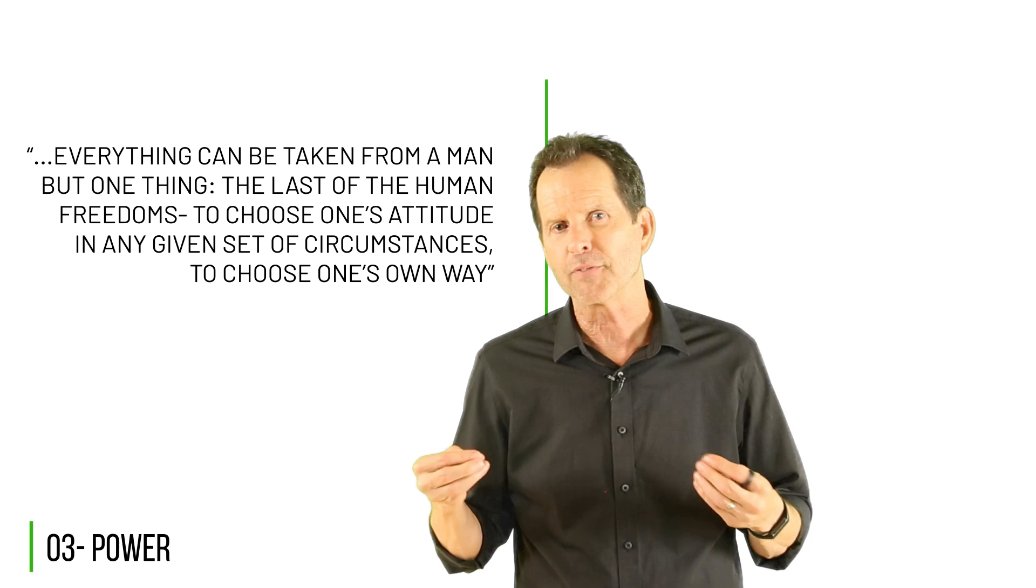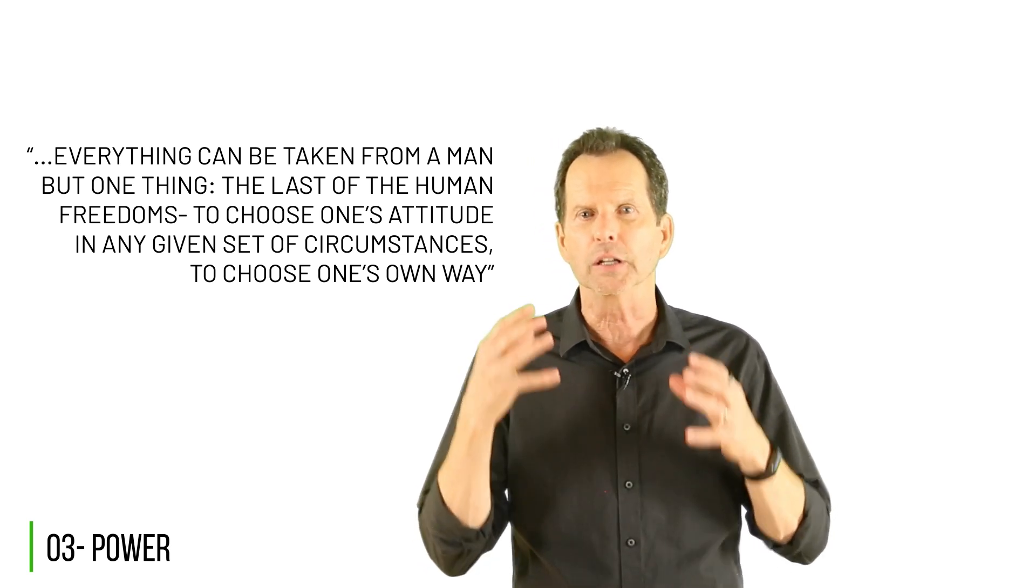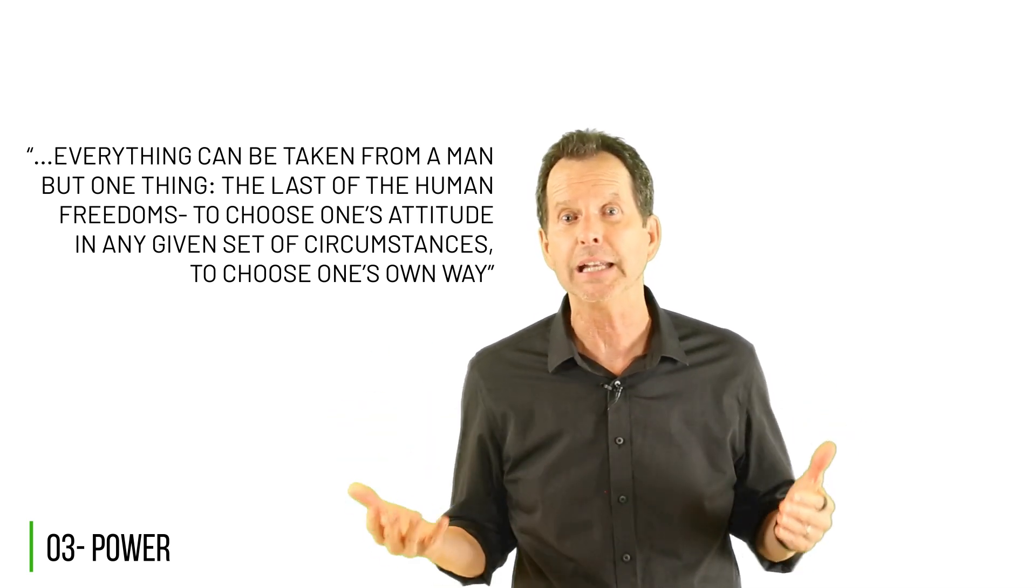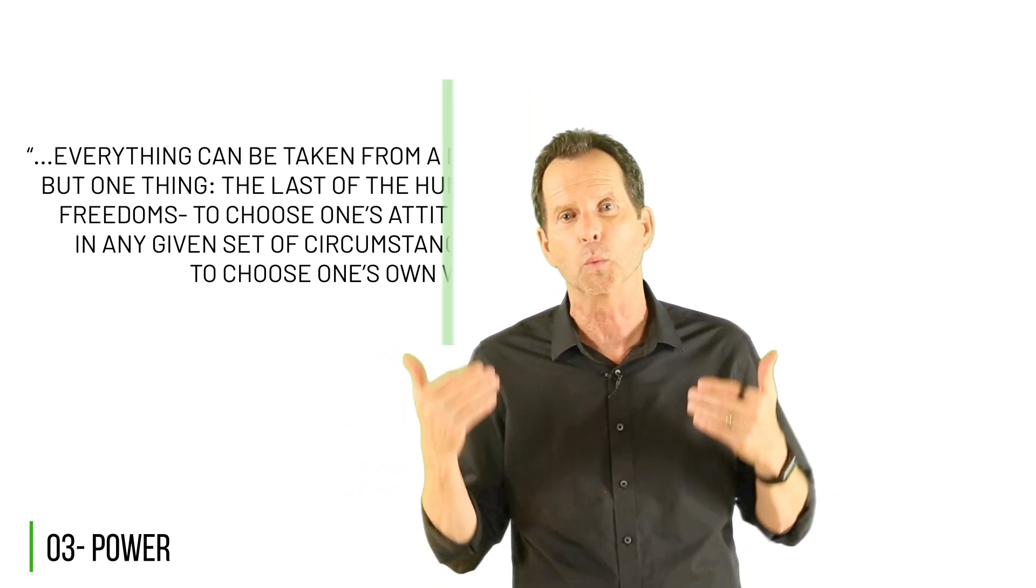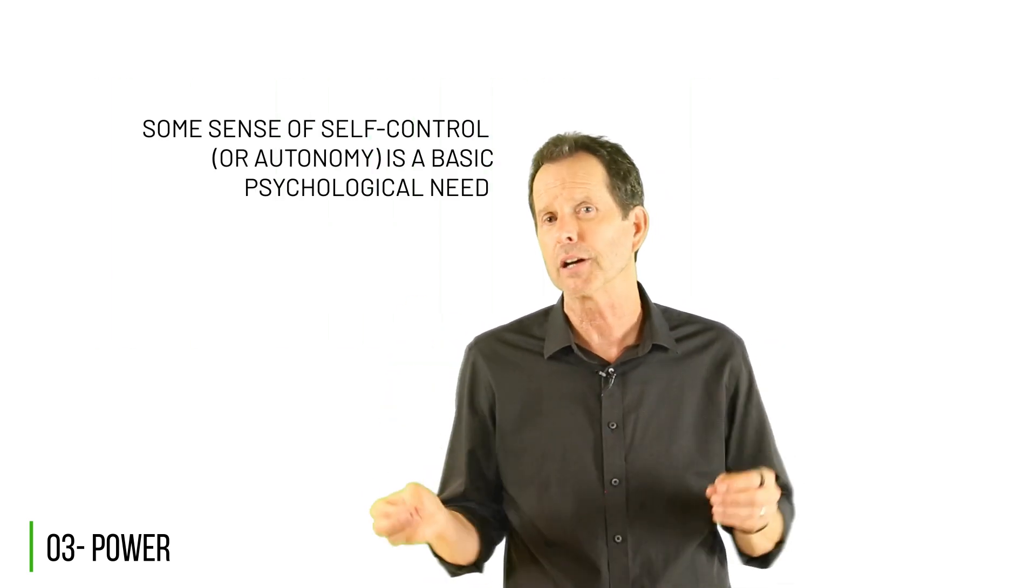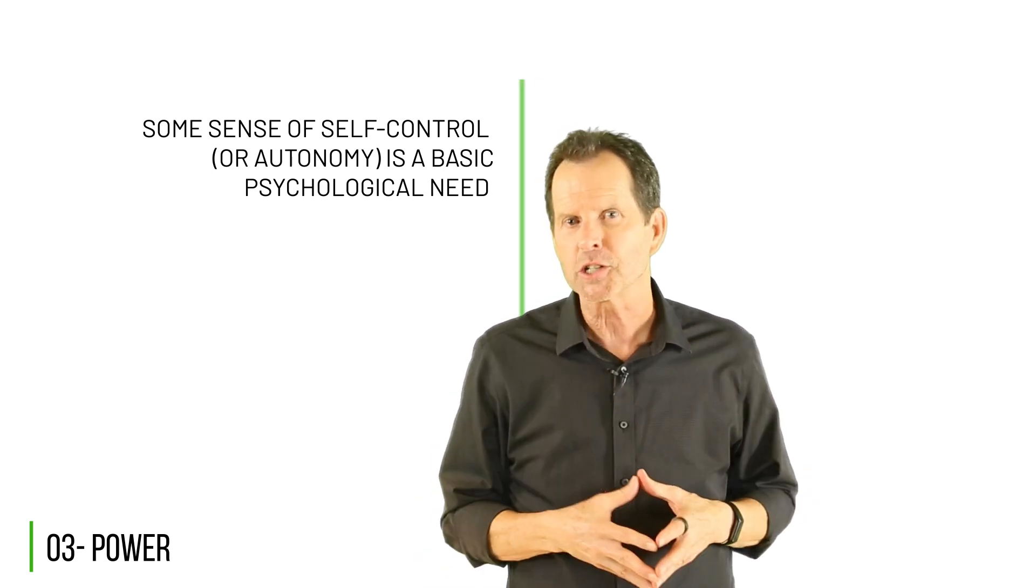My biggest takeaway from Frankl's book is the power each of us has to make choices even under the worst of circumstances. As Dr. Frankl puts it in what's likely the most quoted passage, everything can be taken from a man but one thing, the last of the human freedoms, to choose one's own attitude in any given set of circumstances, to choose one's own way. An individual sense of their power to choose is directly related to their sense of self-control. According to what's called self-determination theory, this isn't something that we just desire or consider nice to have. Some sense of self-control or autonomy is a basic psychological need. With this in mind, let's touch on an area where many leaders and influencers continue to have some misconceptions.